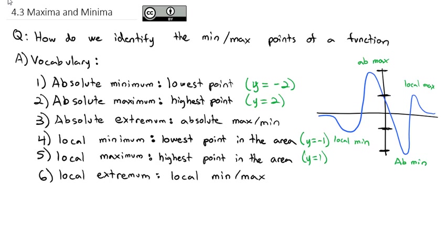What's interesting about all of these points is that the derivative, or the tangent line, at each of these points is always going to be a flat line — the derivative equals 0. They all have a slope of 0. Any time the slope is 0, that identifies one of these local min or local max, and possibly an absolute min or max.